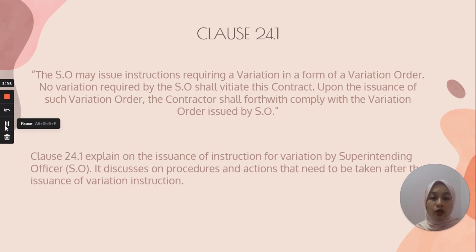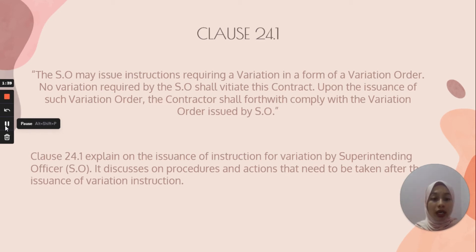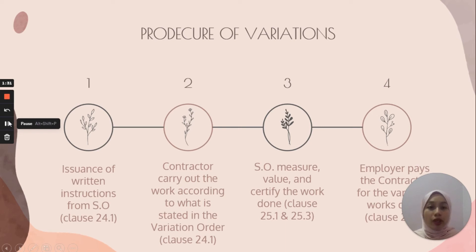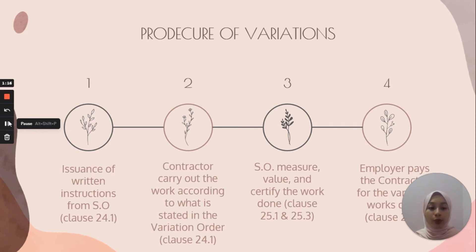Next is Clause 24.1. This clause explains the issuance of the instruction for variation by the Superintending Officer (SO), and discusses the procedures and actions that need to be taken after issuance of the variation instruction. Here are the procedures of variation: First, issuance of written instruction from the SO. Second, the contractor carries out work according to what is stated in the variation works. Third, the SO measures, values and certifies the work done. Fourth, the employer pays the contractor for the variation works done.